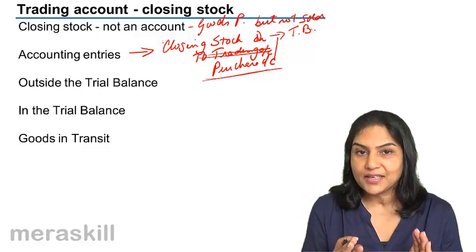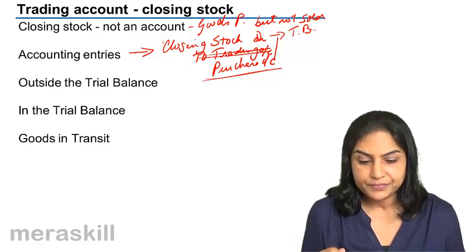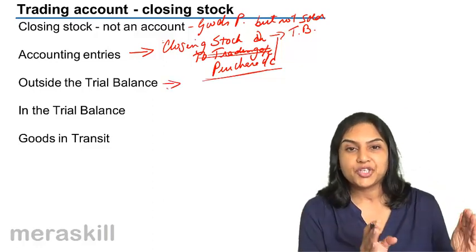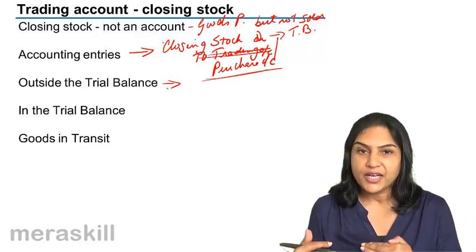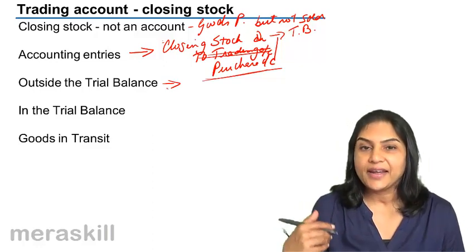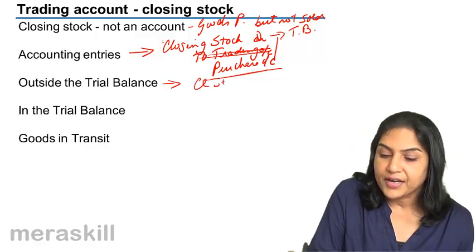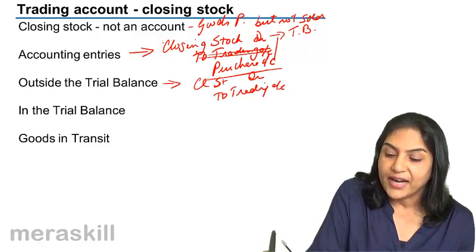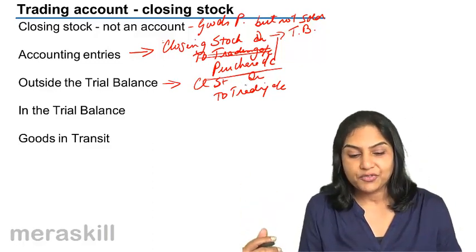If closing stock appears in the trial balance, it is only an asset and would be taken to the asset side of the balance sheet. But if it is outside the trial balance — if the purchase account reflects the cost of 5000 units and outside the trial balance there is information that there is a closing stock of 1000 units — then the entry passed would be Closing Stock to Trading Account. When we do this, we credit the trading account, and that is how the closing stock account is created and taken to the asset side of the balance sheet.